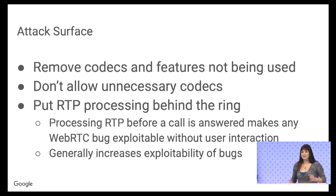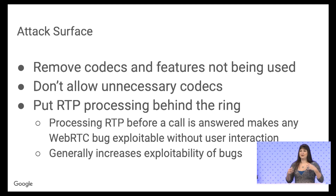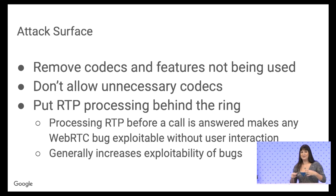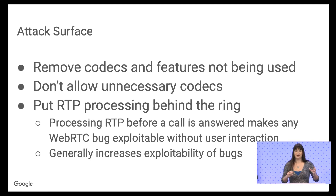You should also reduce the attack surface. Try to make the amount of LibWebRTC you're using as small as possible, so that if there are bugs in certain components, they might not affect your application. For example, for codecs, limit it to the codecs you're actually using. If you don't need H.264, don't compile with H.264. Then if there's a bug in there, it doesn't affect your application.